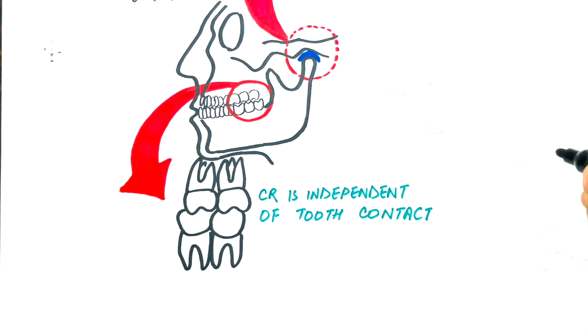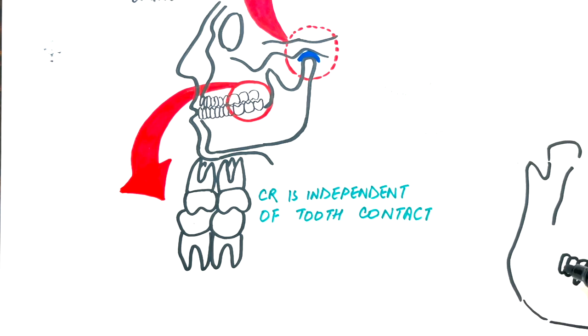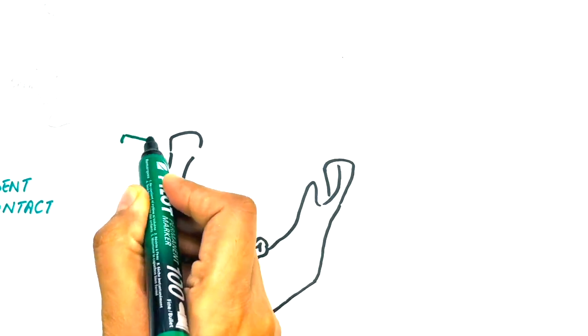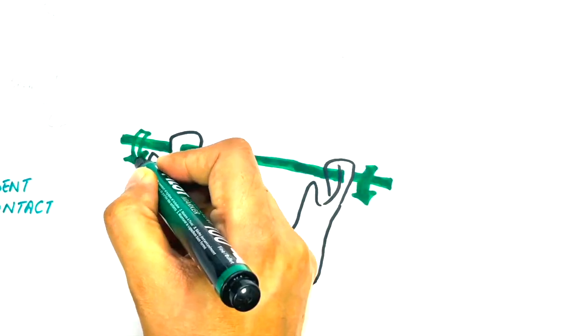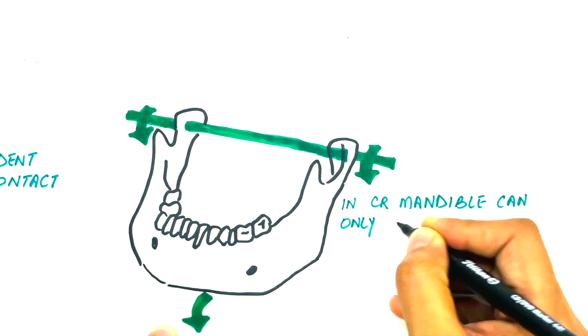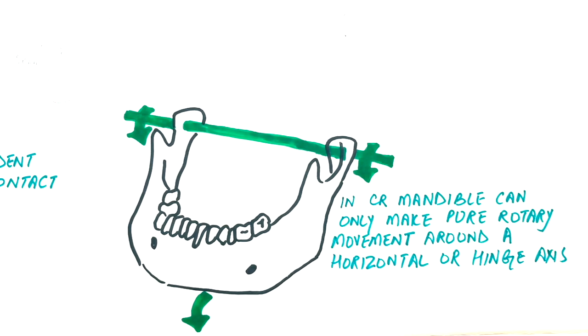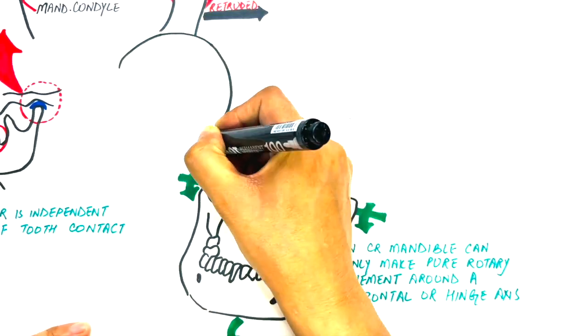The mandible while in centric relation can only make pure rotary movements around an imaginary horizontal or hinge axis which runs through both condyles. In this rotary movement, the patient can open his mouth up to 20 mm.